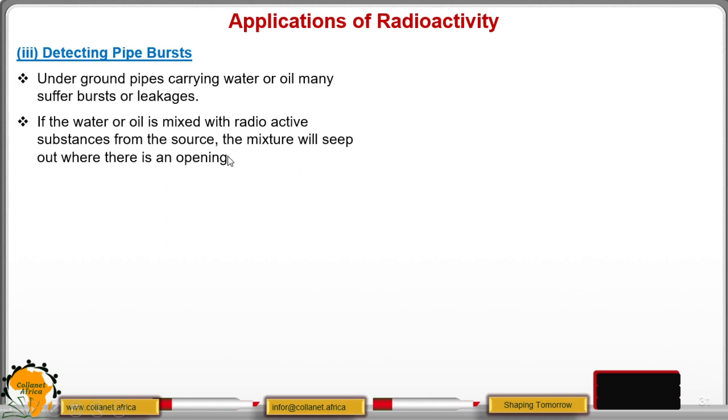Because there is radioactive substance in the oil, the radiations will be emitted. When you have the radioactive detector, you can be able to know there is a radiation that is being detected and you can even know the type of particle that is being emitted there. That way, you are able to know that there is a leakage at a particular point.